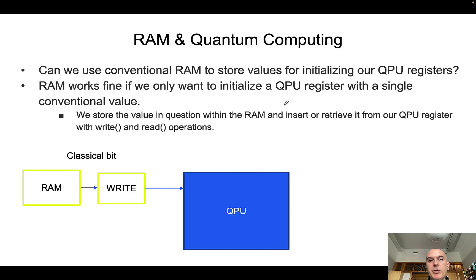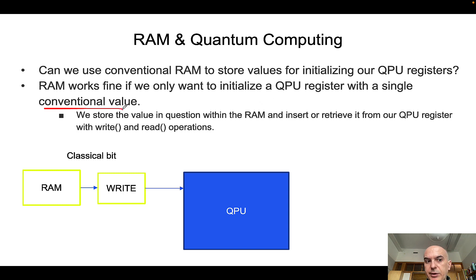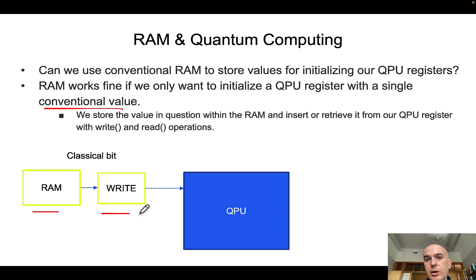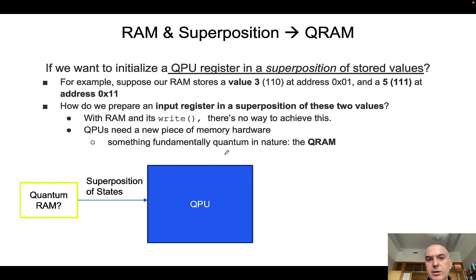So we can use conventional RAM to store values for initializing our QPU register only in the case that we have a conventional value. What is the conventional value? Well, the conventional value is a pure state — it is not a superposition of states. So if we have a conventional value we can simply use the conventional RAM and then do a write QPU instruction to initialize our QPU.